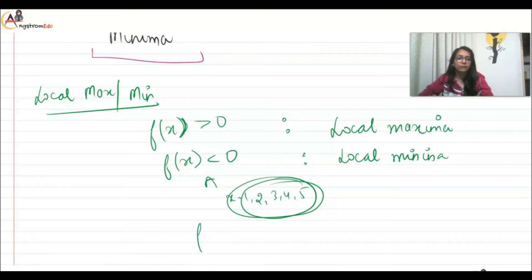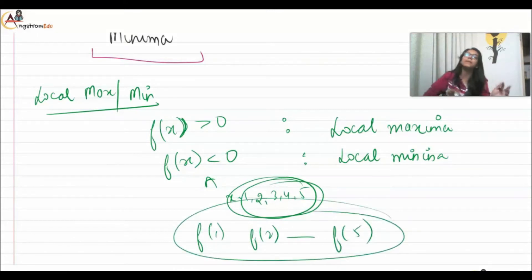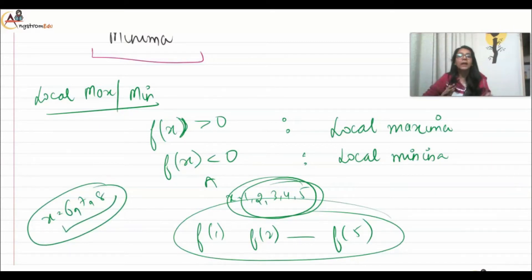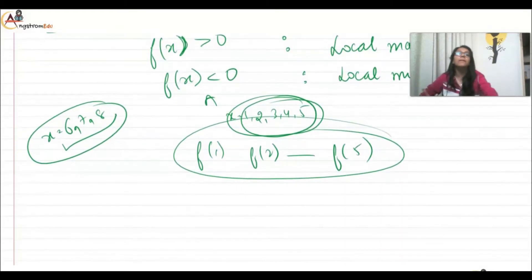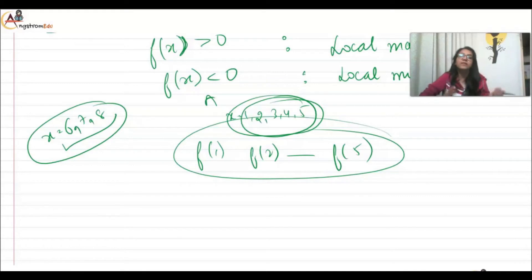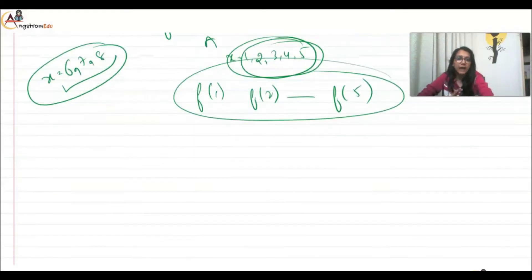The values f(1), f(2) through f(5) will be the local minima values, and similarly for local maxima values. Local maxima and minima can include more than one point — all the points where we are getting the maximum (positive) values of the function, and the minimum (negative) values of the function.